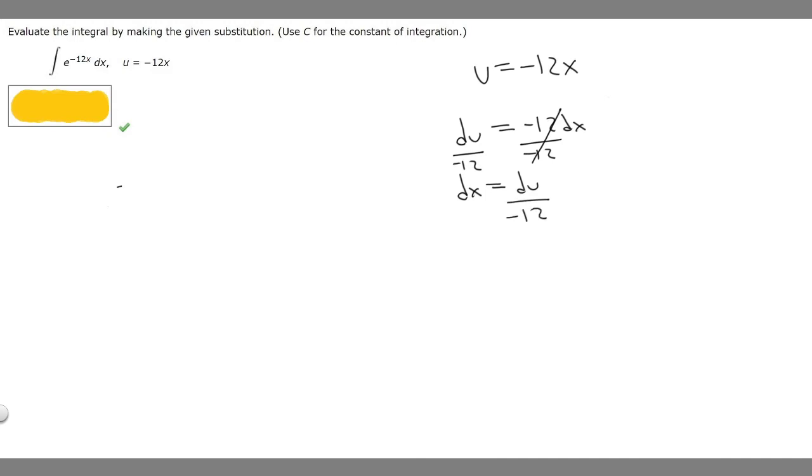Then we want to rewrite our integral. So here's our integral e and then what we want to do is replace minus 12x with just u. So it's just going to be e to the u.